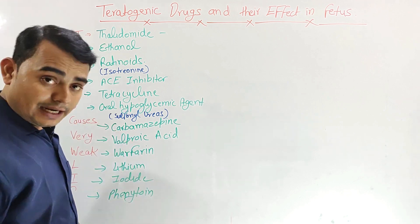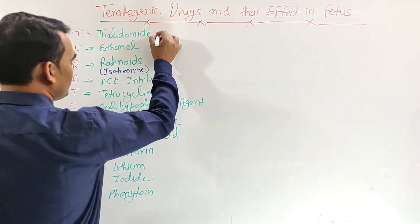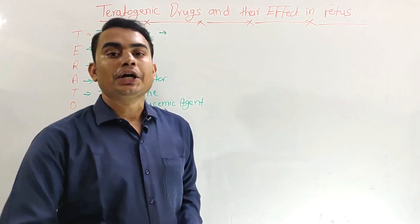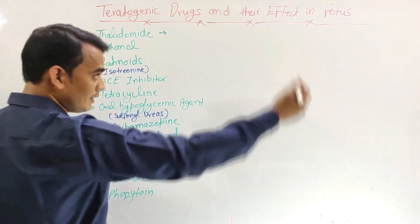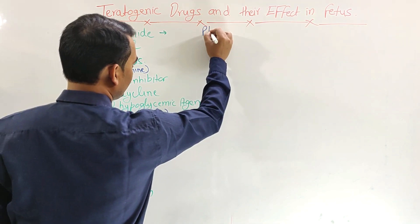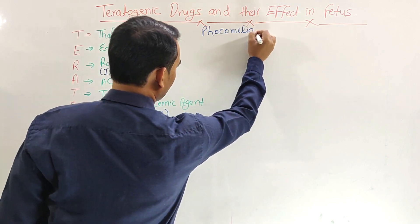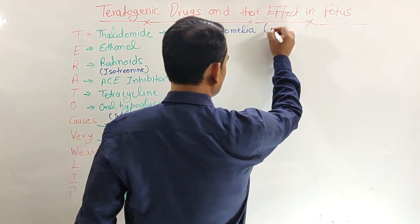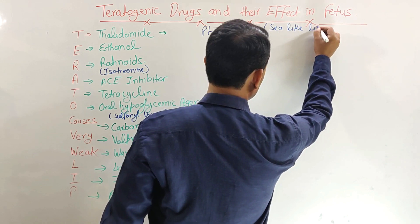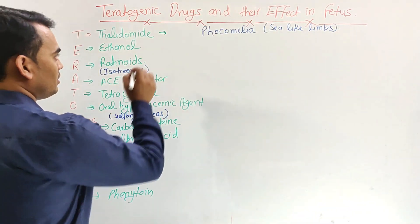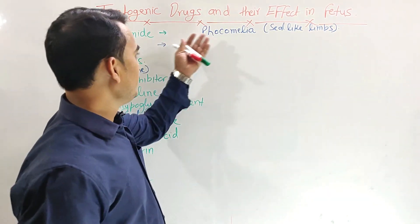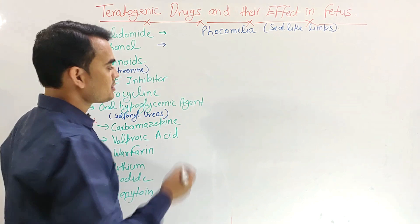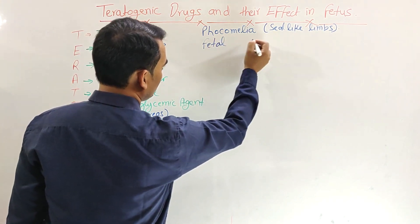Now let's look at the side effects produced by each teratogenic drug. The first drug is Thalidomide — it was the first drug shown to have teratogenic action. Thalidomide causes phocomelia in the fetus. Phocomelia is also known as seal-like limbs, where the limb development is severely deformed.